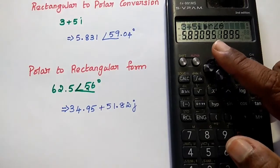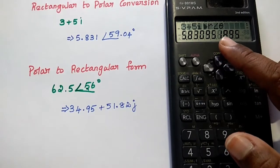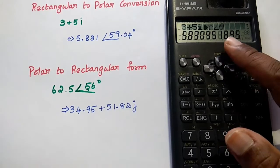You can see the magnitude value is 5.83095. Here we can write the magnitude value is 5.831.